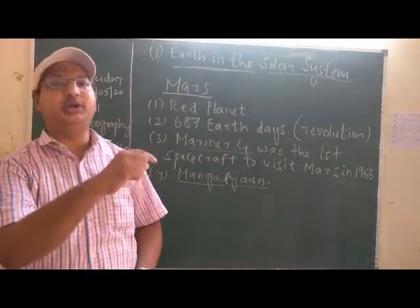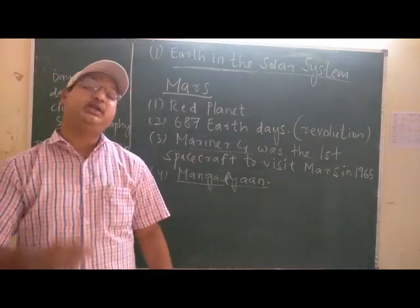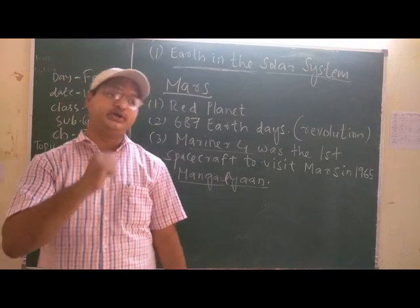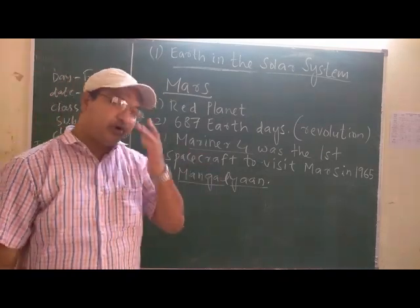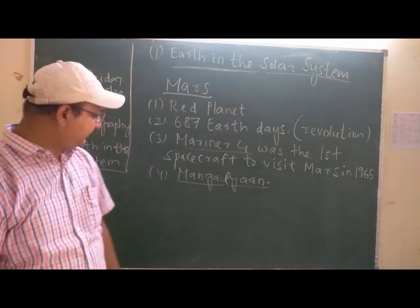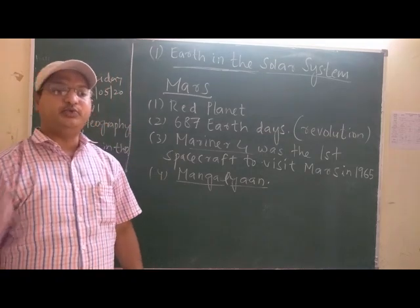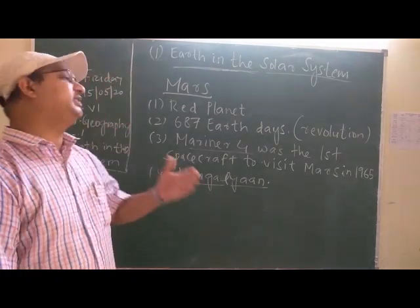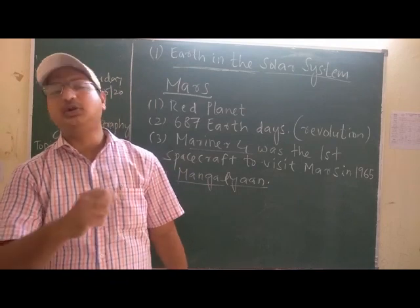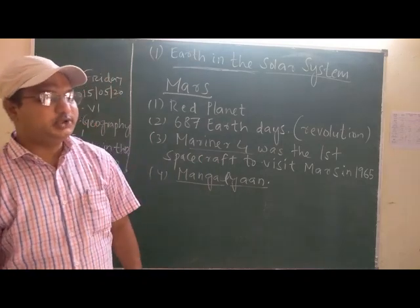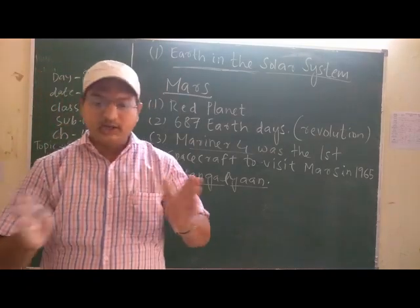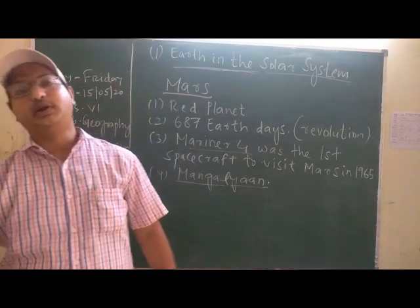Between Mars and Jupiter there is an asteroid belt. You can see the picture of the solar system in your book — there is an asteroid belt. It means there are numerous small rock-like bodies revolving around the sun in a particular direction, between the orbits of Mars and Jupiter. They have their own orbits and they move in a fixed path. These are called asteroids, and the asteroid belt forms the boundary between the inner solar system and the outer solar system.